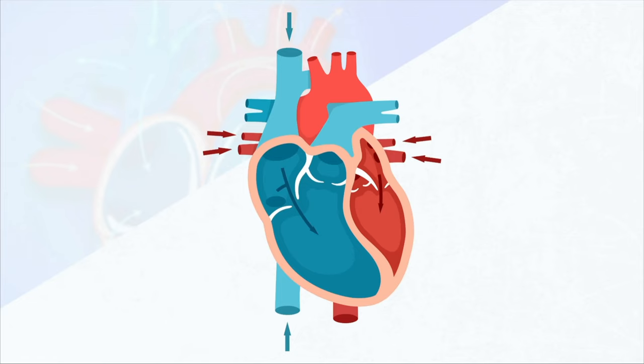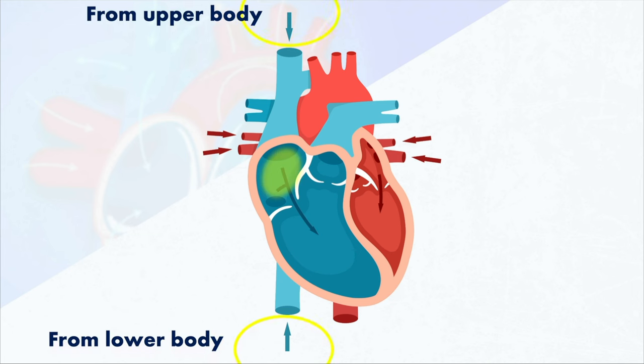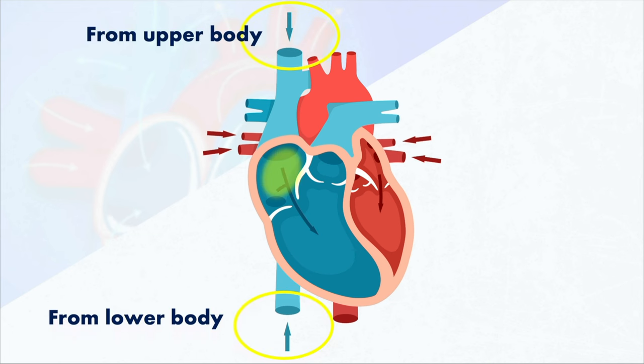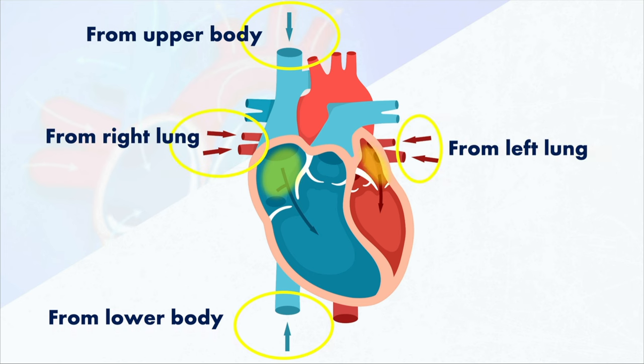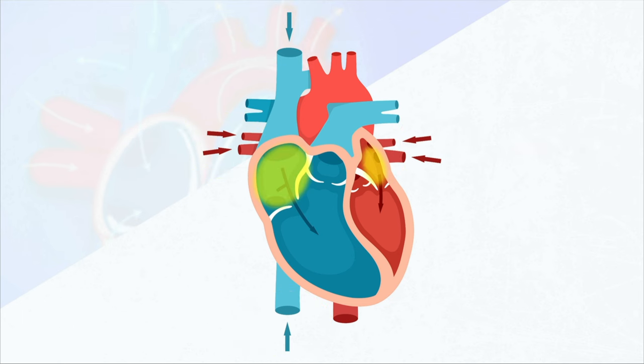Let's look at where things are right before the atria begin to contract, just to set the scene. Blood is coming back to the heart. On the right side, we have blood coming back from the rest of the body. And on the left side, we have blood coming back from the lungs. And to start off the cardiac cycle, the atria are going to contract.